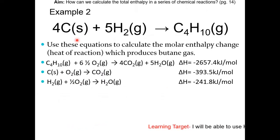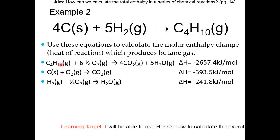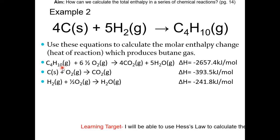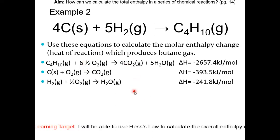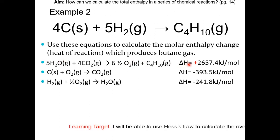Now let's look at example 2 in the class packet: use these equations to calculate the molar enthalpy change — the heat of reaction — which produces butane gas. Butane is C4H10 and this is the overall equation. There are three sets of equations we must combine. For the first equation, butane C4H10 is on the reactant side but it needs to be on the product side in the overall equation. Therefore, we must reverse this equation by flipping it, which means we multiply delta H by negative 1, giving positive 2657.4 kilojoules per mole.